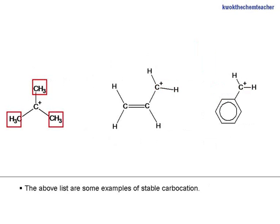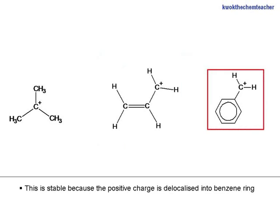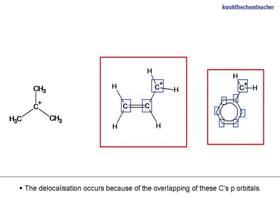The above list are some examples of stable carbocations. This is stable because the positive charge is delocalized into the carbon double-bond system. This is stable because the positive charge is delocalized into the benzene ring. The delocalization occurs because of the overlapping of these carbons' P orbitals.